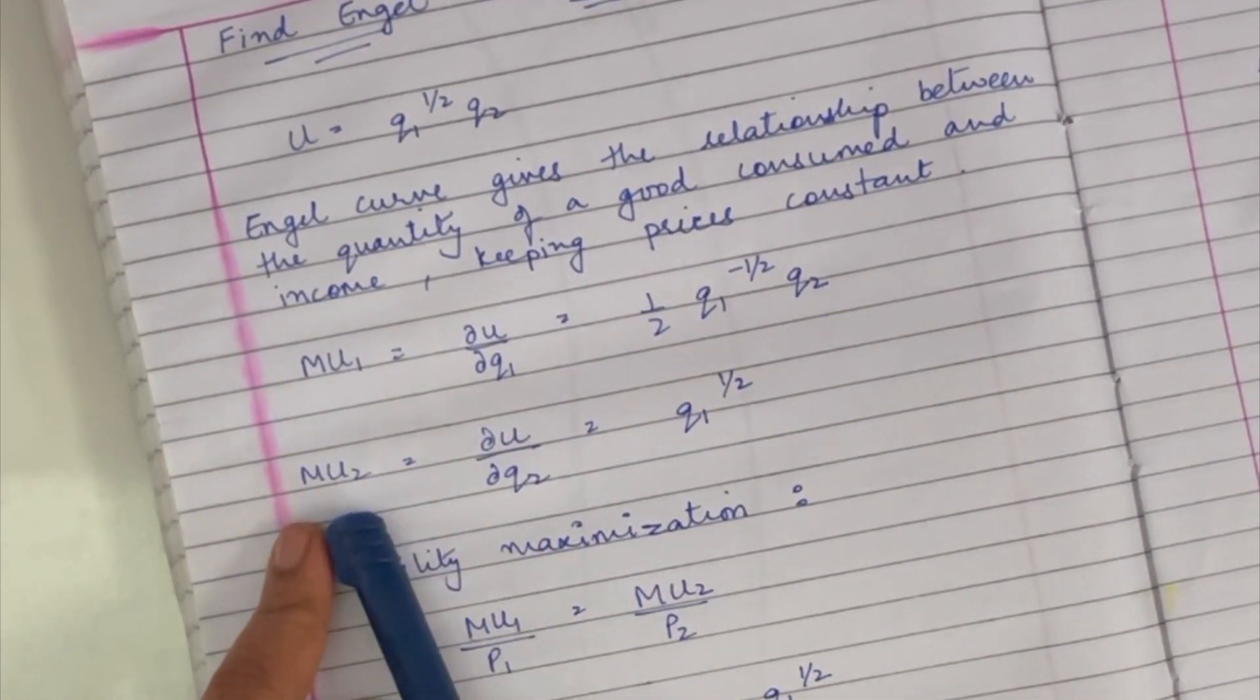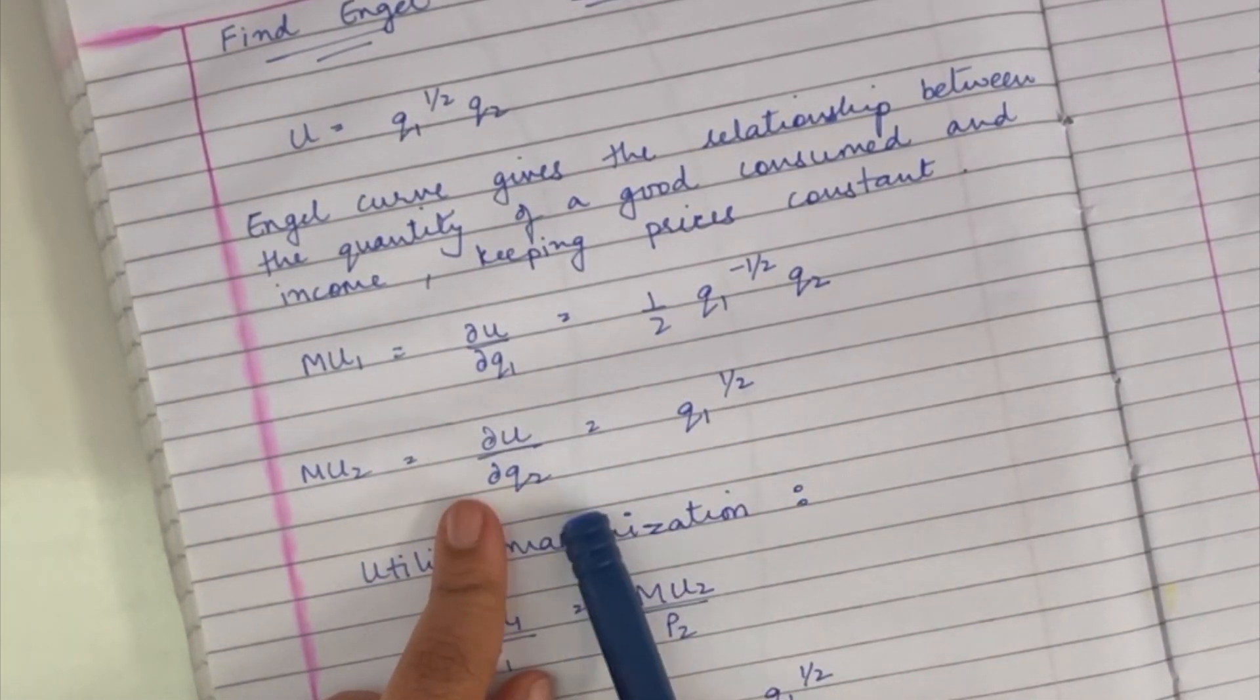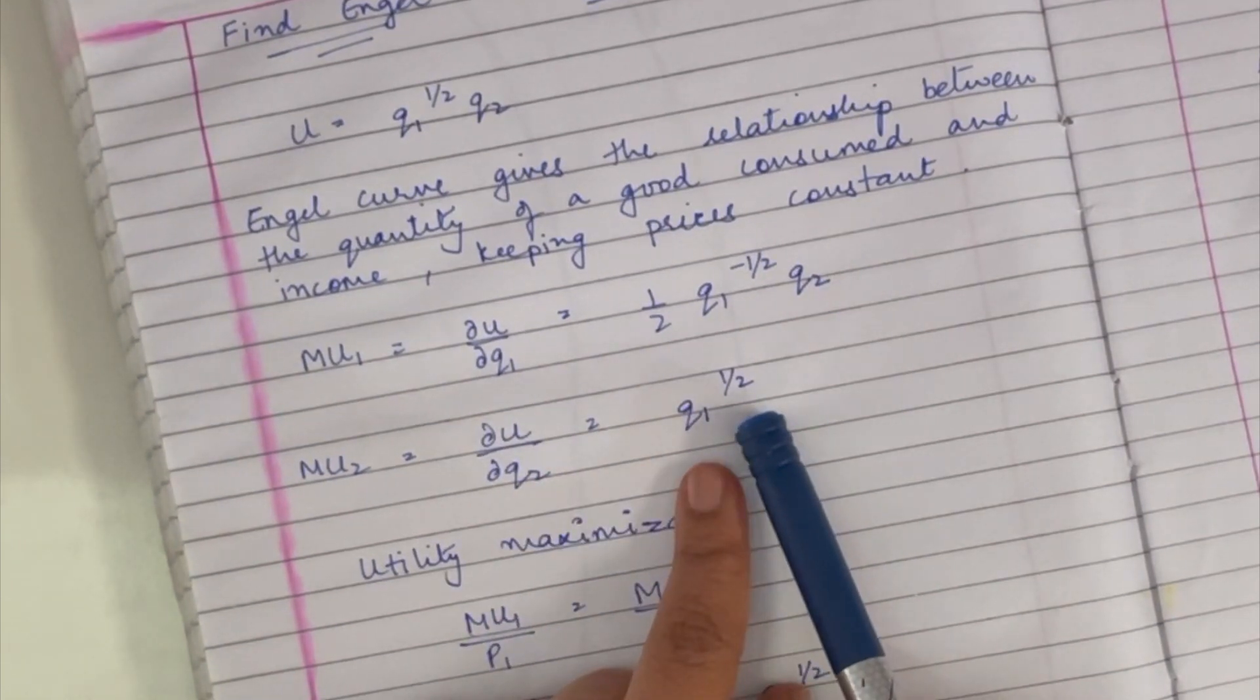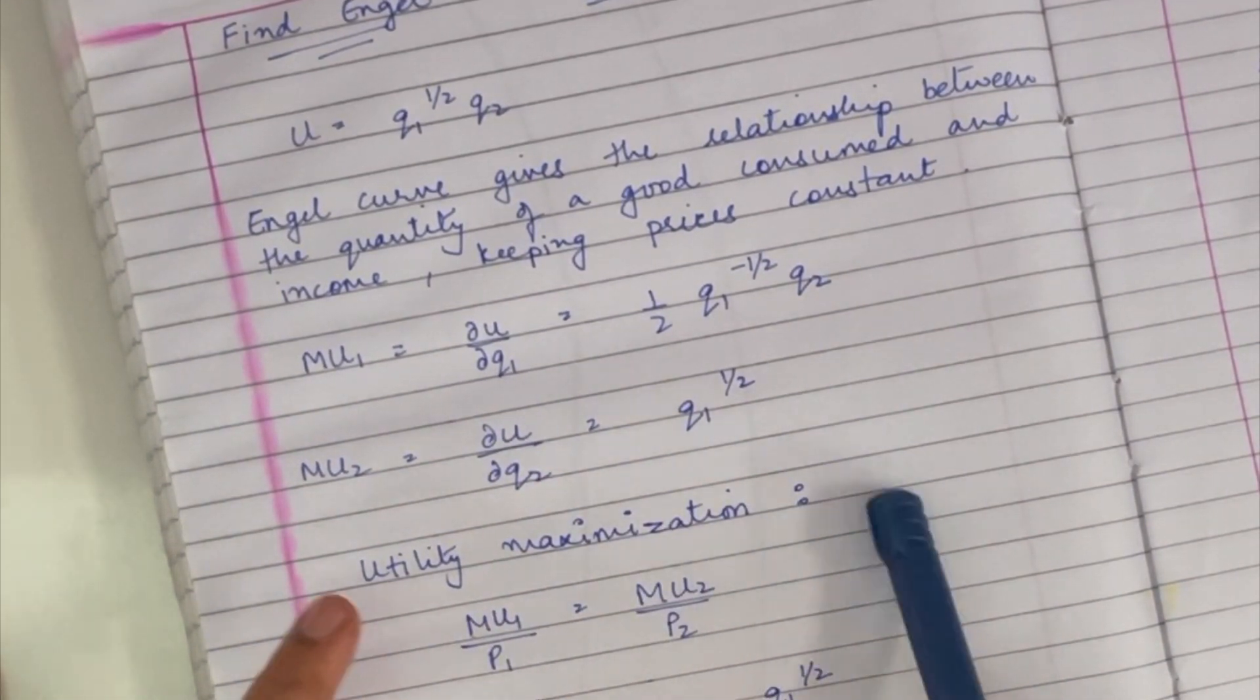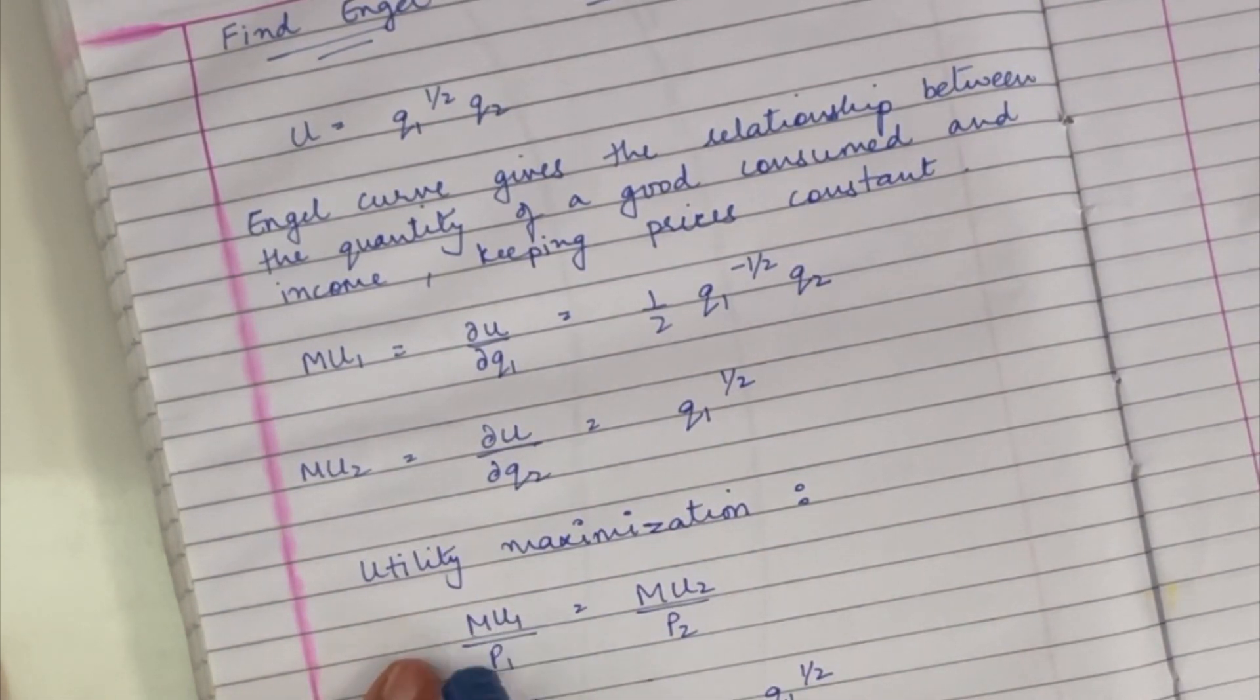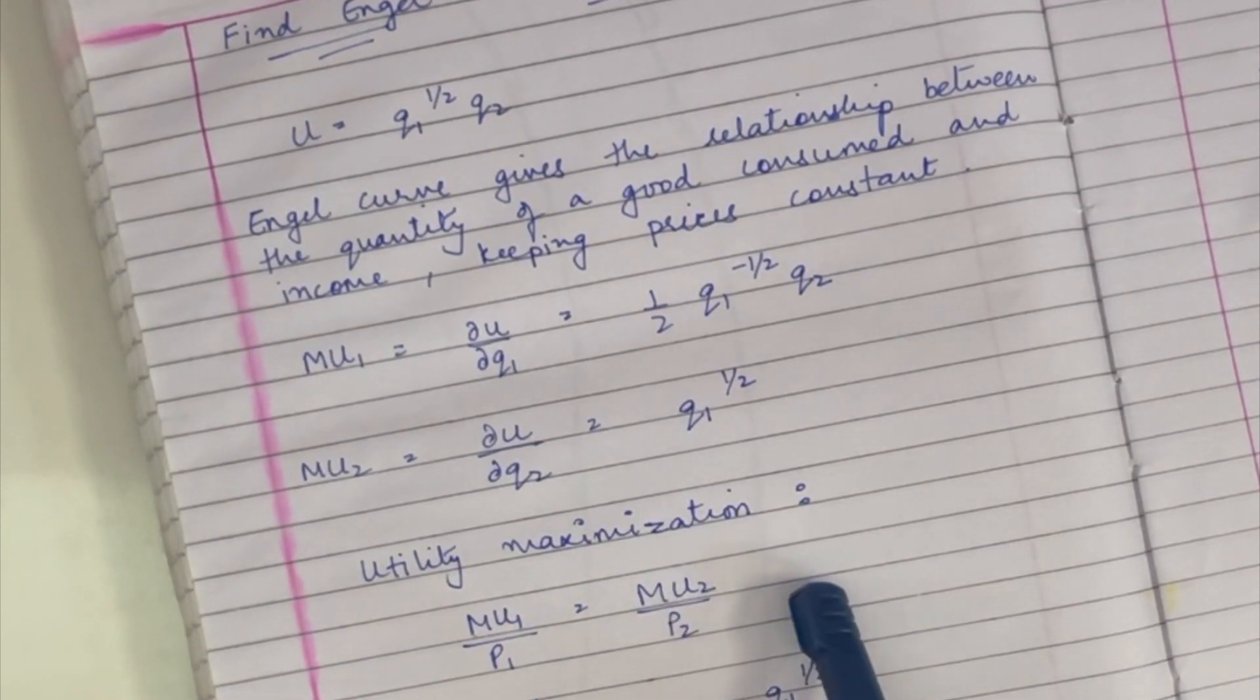And then we have to take out the marginal utility for good two, which is equal to the derivation of utility function with respect to q2, which is q1 half. Now utility maximization is given by MU1, marginal utility for good one divided by price of good one, equals marginal utility of good two divided by price of good two.